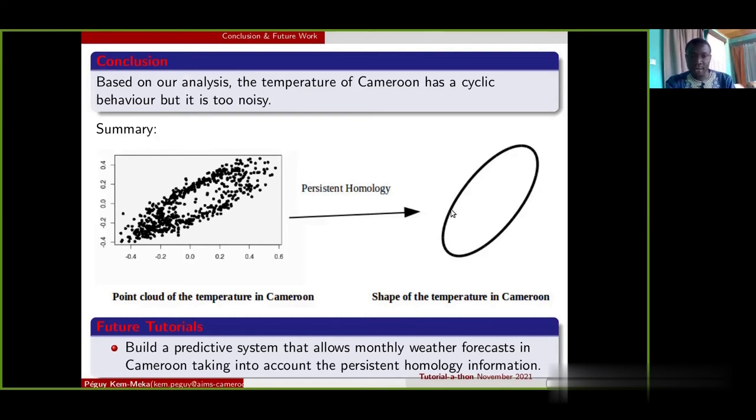In the future tutorial, we plan to build a predictive system that allows monthly weather forecasts in Cameroon taking into account persistent homology information.